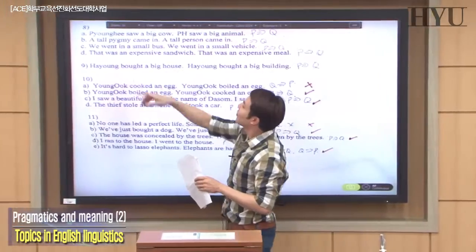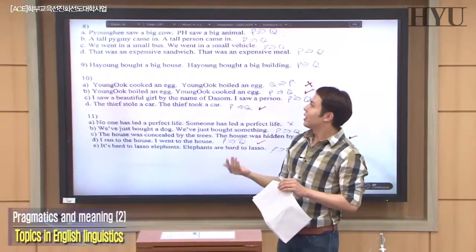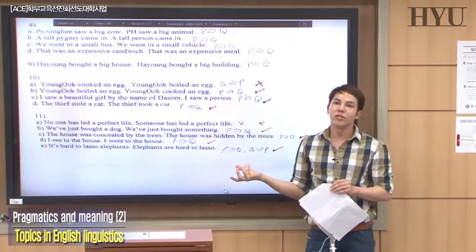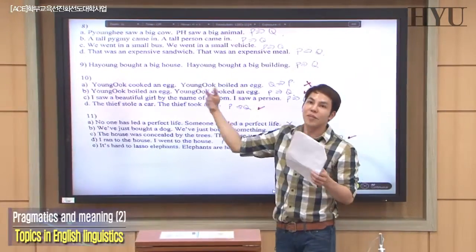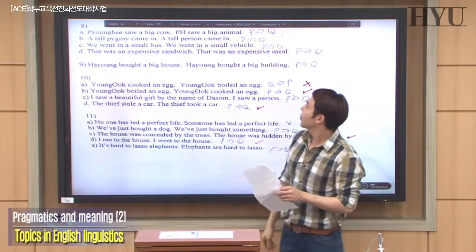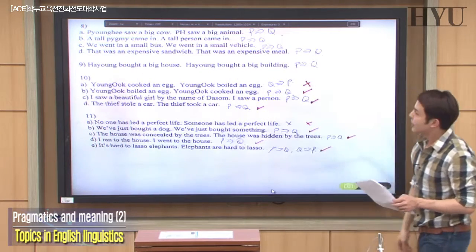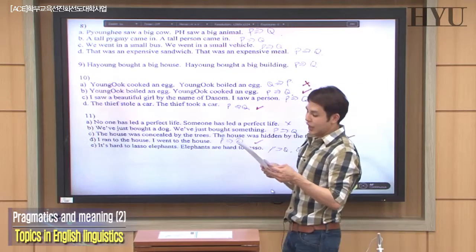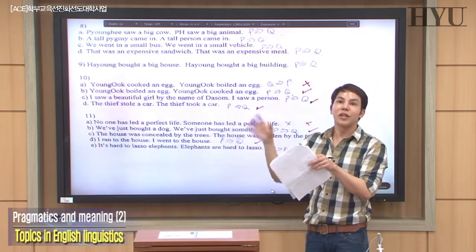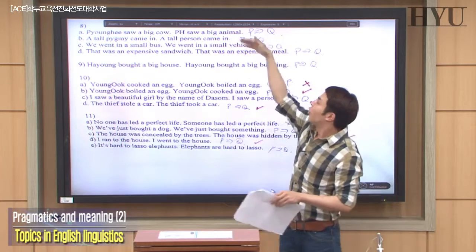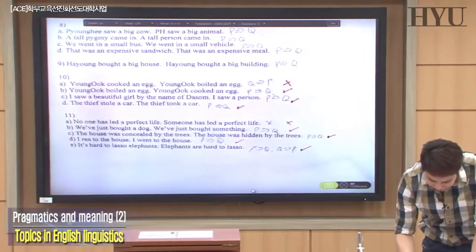'We went in a small bus' and 'we went in a small vehicle.' Does going in a small bus mean we went in a small vehicle? No, not necessarily — a small bus doesn't necessarily mean a small vehicle; it could be a big vehicle. And for D, 'that was an expensive sandwich' and 'that was an expensive meal' — no entailment either. Maybe the sandwich is expensive but the whole meal is not. So no entailment relationship from A to D.